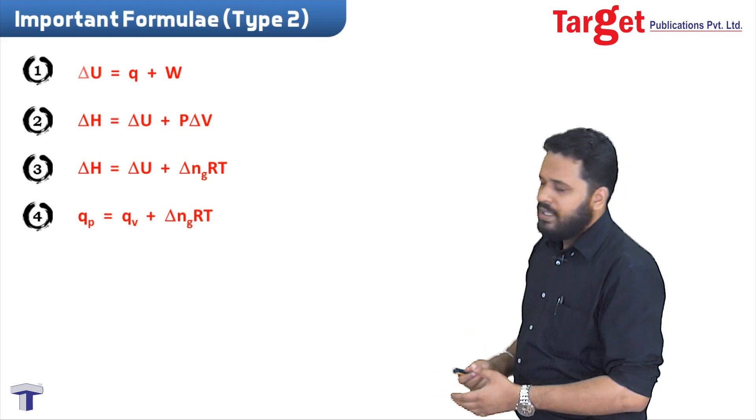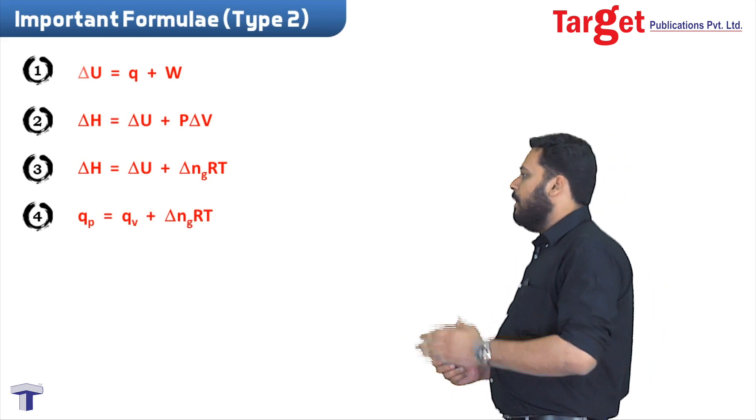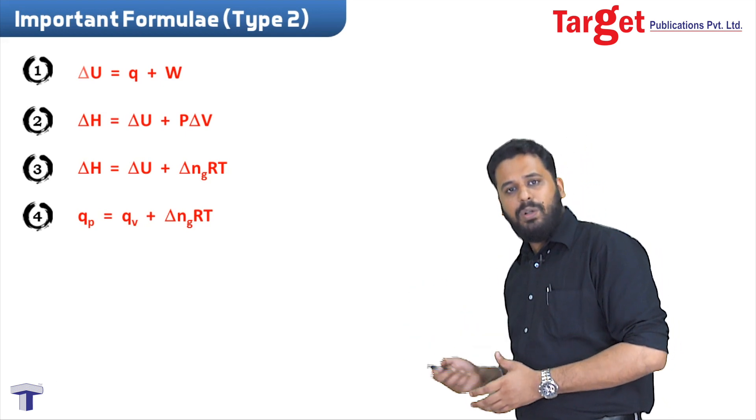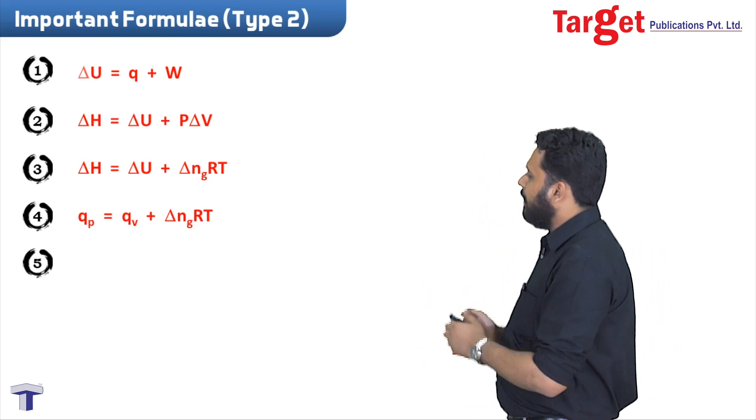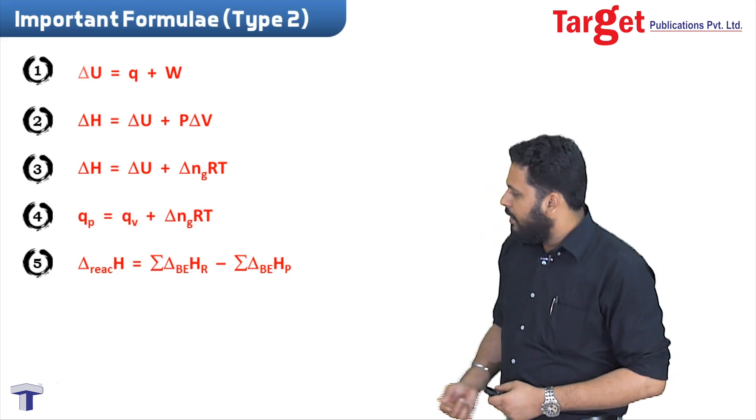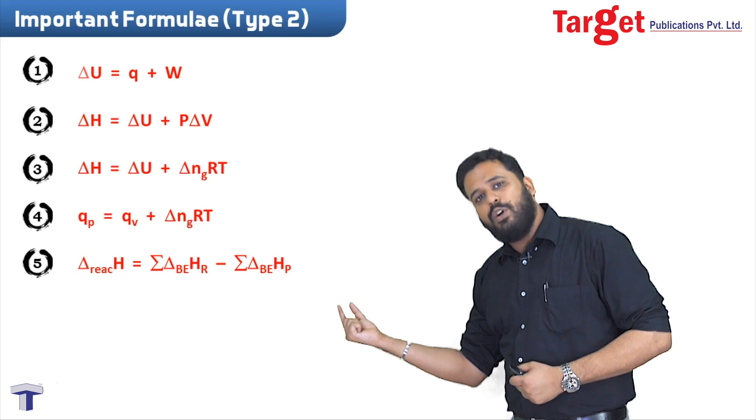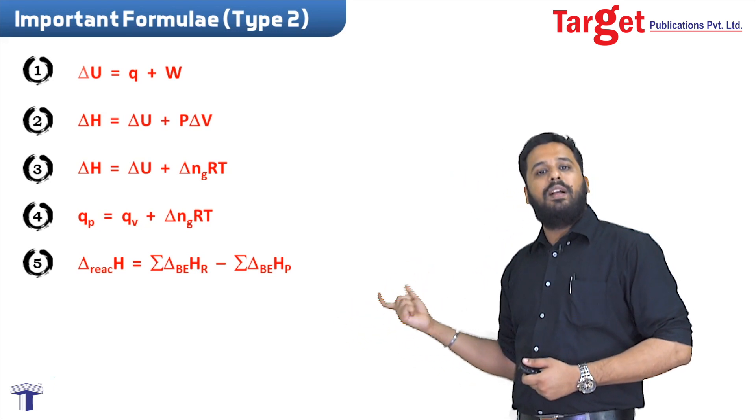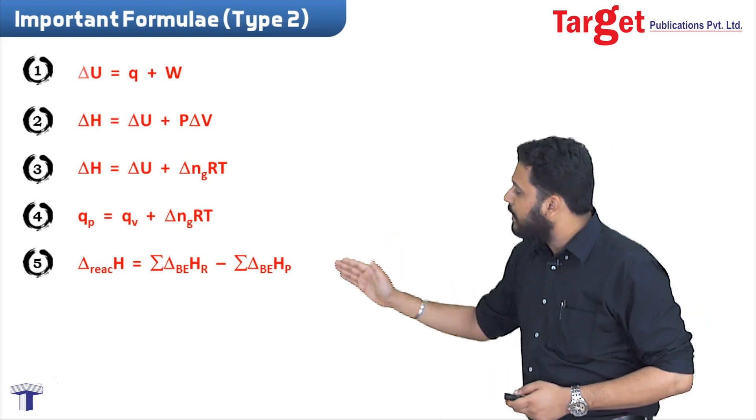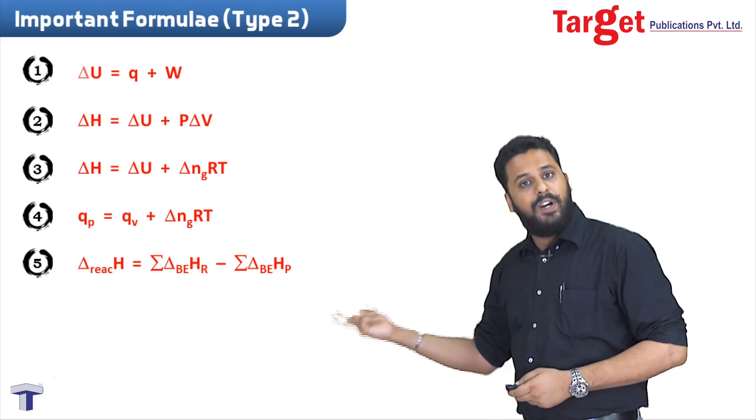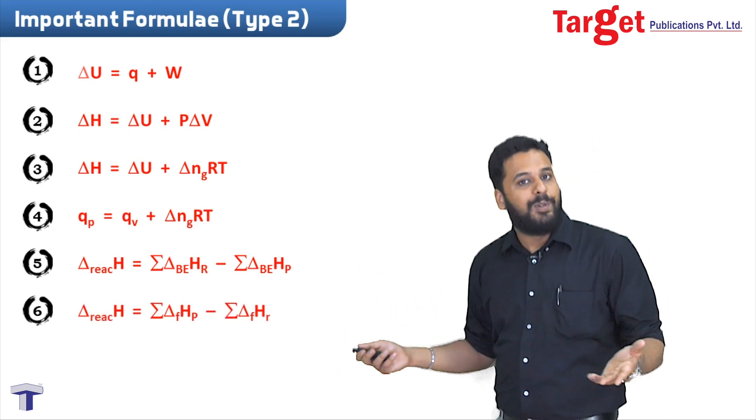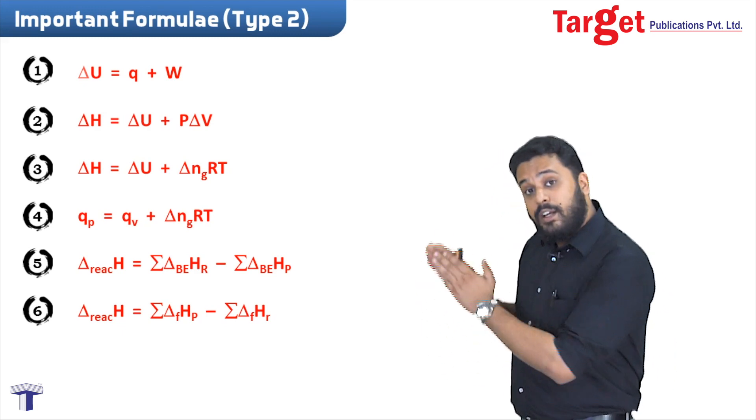Moving to the fifth one, we recently saw in the previous video how to calculate delta H - the enthalpy of reaction - which is summation of bond enthalpy of reactants minus summation of bond enthalpy of products.